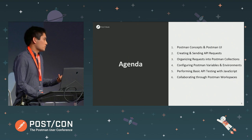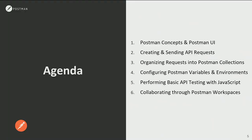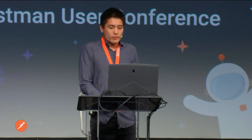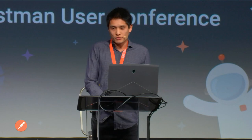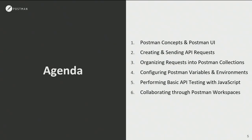So this is the agenda. We'll start with the Postman concepts and look at the different elements of the interface — it's important to understand these before we dive into the product. First we'll look at creating and sending API requests. We'll also learn how we can organize these requests into what we call collections, how we can make use of variables and environments, and then we'll perform some basic API testing and look at workspaces for collaboration.